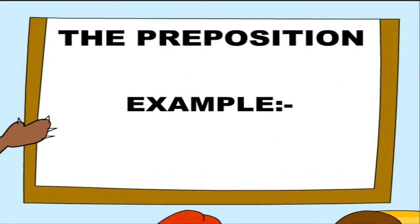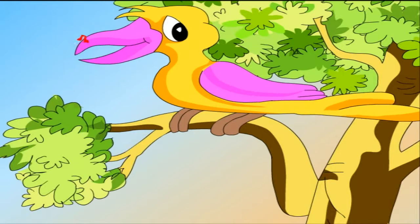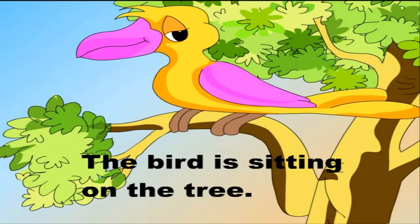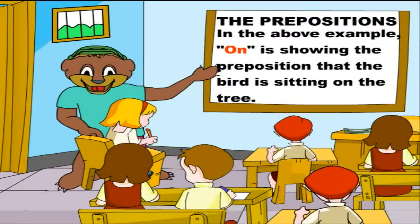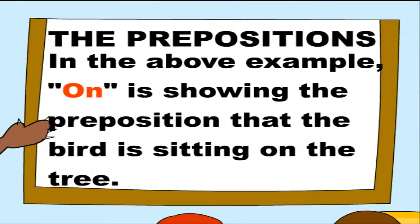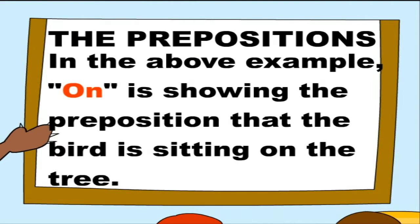Example. The bird is sitting on the tree. In the above example, 'on' is showing the preposition that the bird is sitting on the tree.